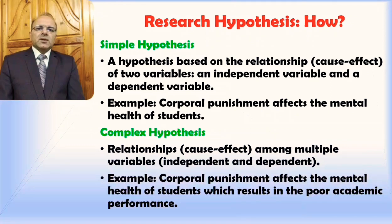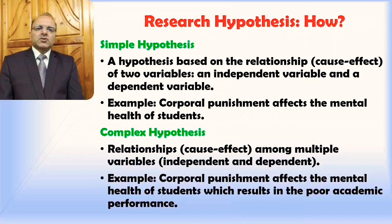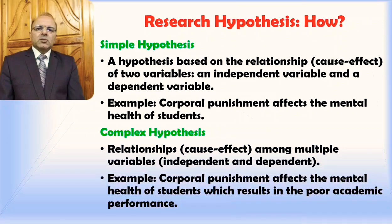Then there is the complex hypothesis, which deals with relationships or cause and effect among multiple variables — independent and dependent. If there are more than one independent and dependent variables, guessing a relationship between these two types of variables will be an example of a complex hypothesis. For example: corporal punishment affects the mental health of students, which results in their poor academic performance. Here there is one independent variable, one dependent variable, and then another dependent variable, making it complex.